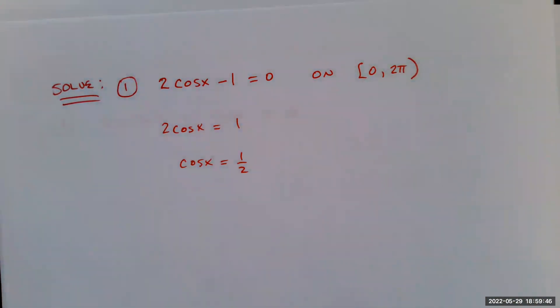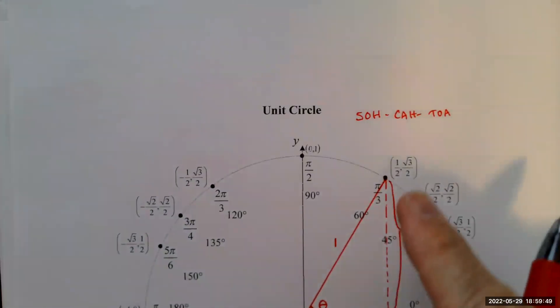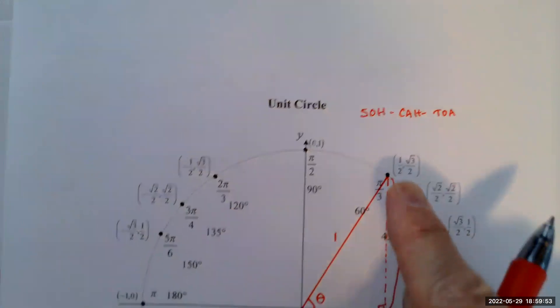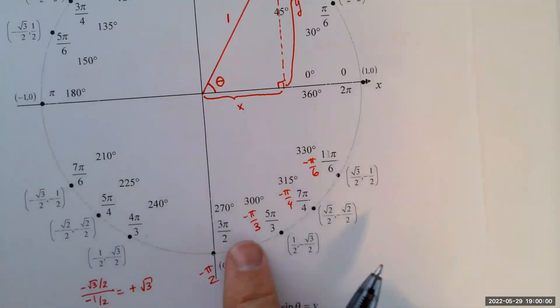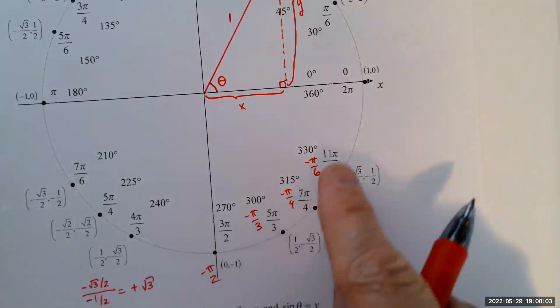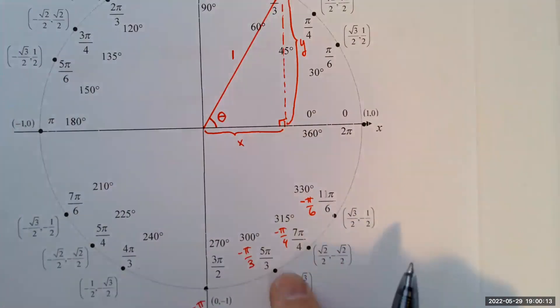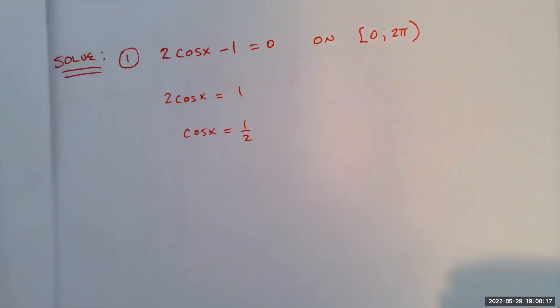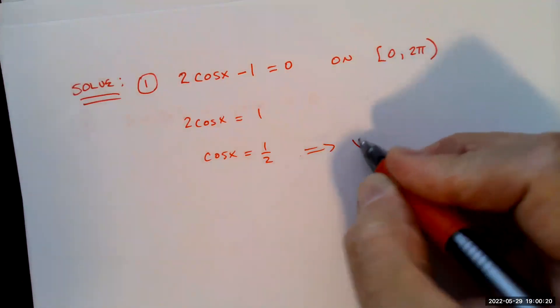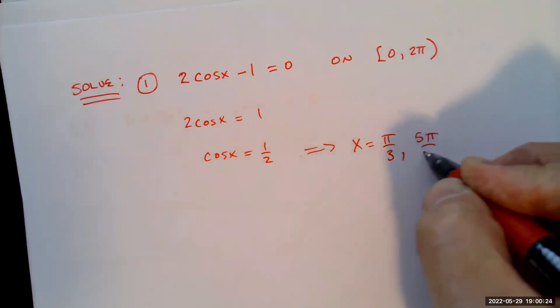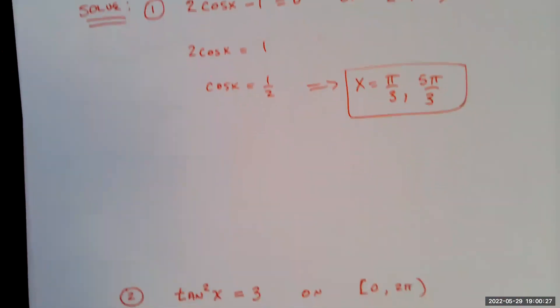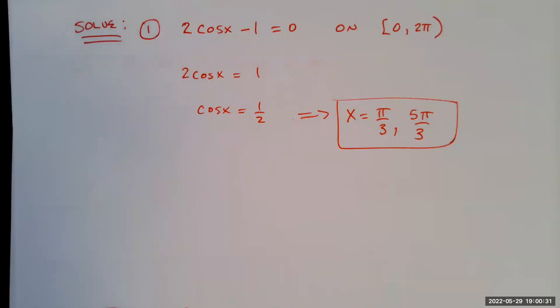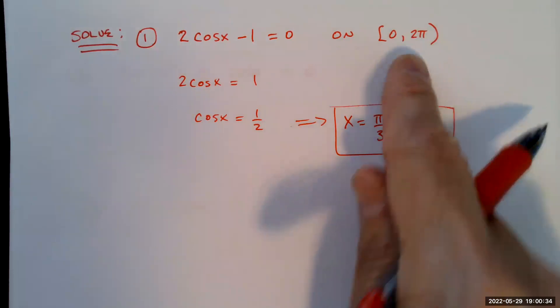On the unit circle, the x-coordinate equals 1/2 at π/3. On the interval from 0 to 2π, the x-coordinate is also 1/2 at 5π/3 — these two points are vertically aligned on the unit circle. So the solutions are x equals π/3 and x equals 5π/3. Note there are infinitely many solutions in general, but just on this interval it's these two.